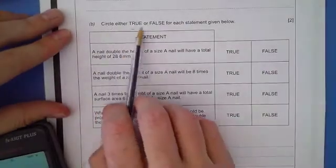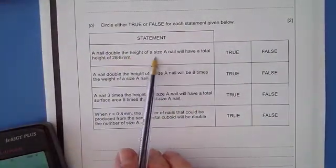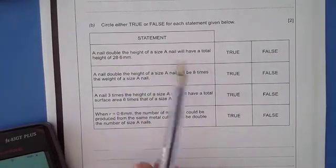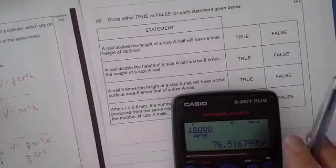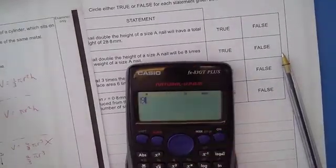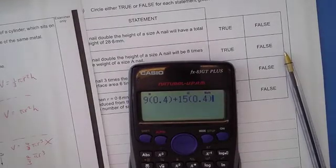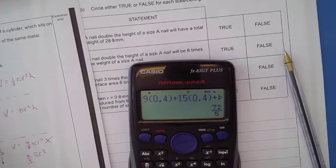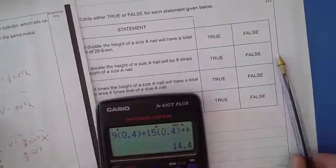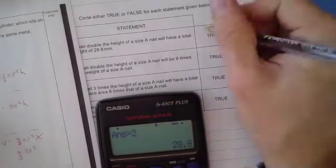The next bit says circle either true or false for each of the statements below. A nail double the height of size A will have a total height of 28.4 millimeters. Now, the height of this nail was 9R, so 9 lots of 0.4, plus 15 lots of 0.4, and then plus 12 lots of 0.4, which comes to 14.4. So a size double that, yeah, that would be double it. If I times that by 2, look, I get 28.8, so that's true.